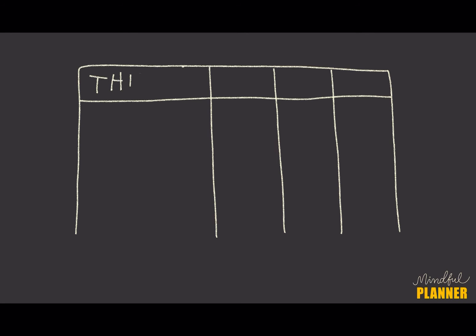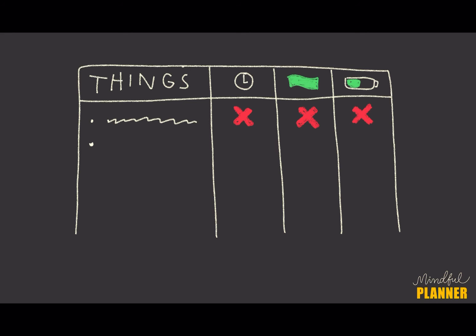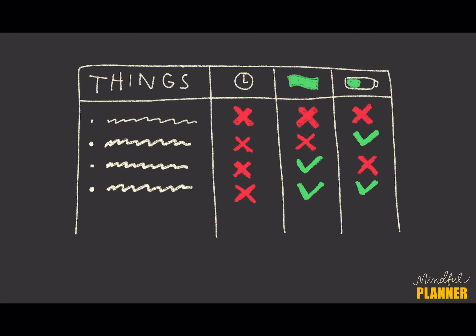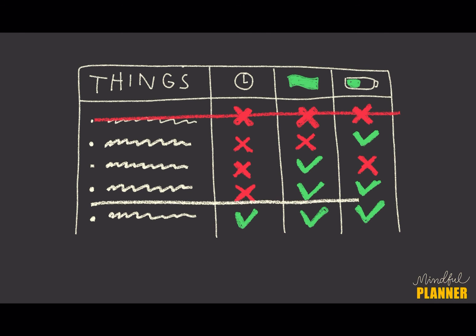Now let's create your budget. List everything from your brainstorm session and draw three columns that represent time, money, and energy. When the list is done, you can clearly see what goes and what stays.